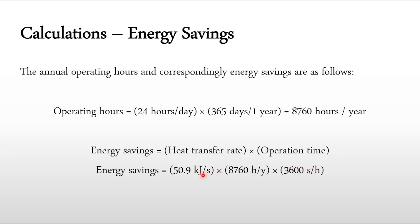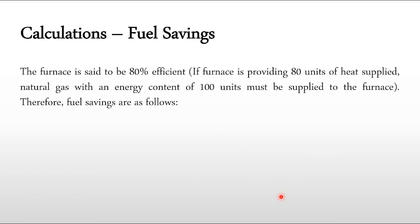Multiplying by 3,600 seconds per hour converts the units: seconds cancel, hours cancel, and we get the answer in kJ/year. The energy savings equals 1.605 × 10⁹ kJ per year — that is our total energy saving from this process.